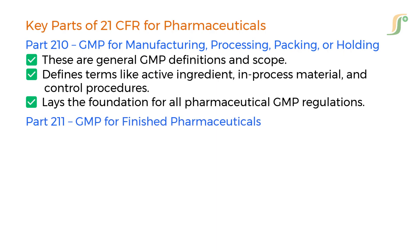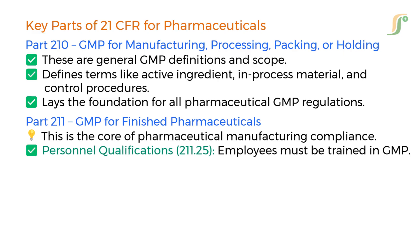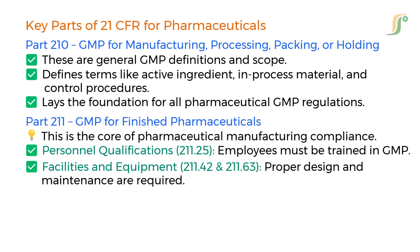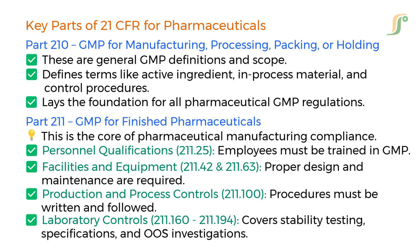Part 211 covers GMP for finished pharmaceuticals — this is the core of pharmaceutical manufacturing compliance. Key topics include: Personnel qualifications (211.25) — employees must be trained in GMP. Facilities and equipment (211.42 and 211.63) — proper design and maintenance are required. Production and process controls (211.100) — procedures must be written and followed. Laboratory controls (211.160 to 211.194) — covering stability testing, specifications, and OOS investigations.